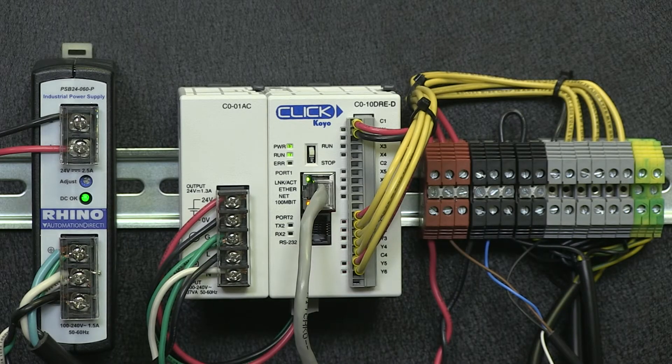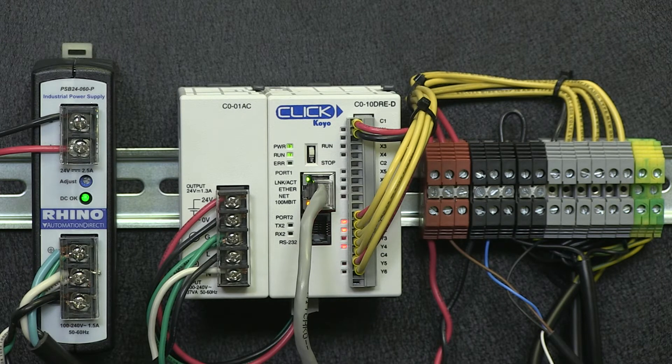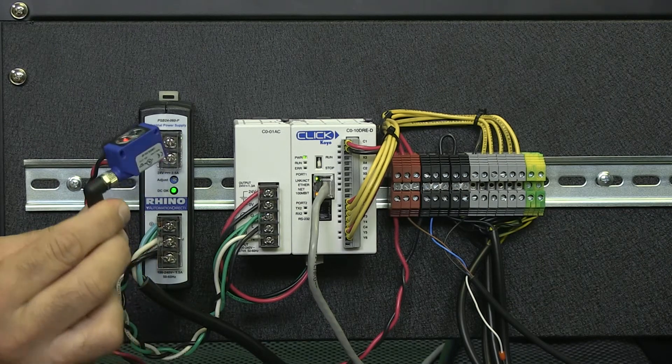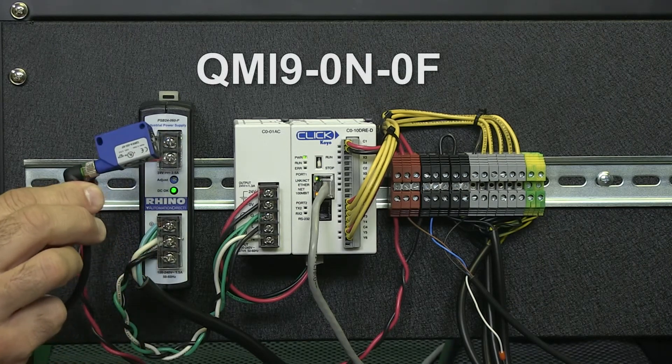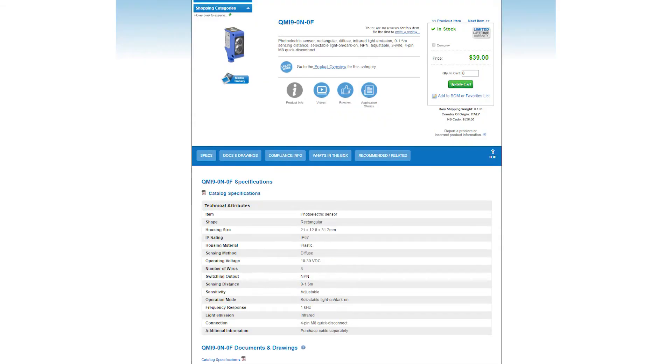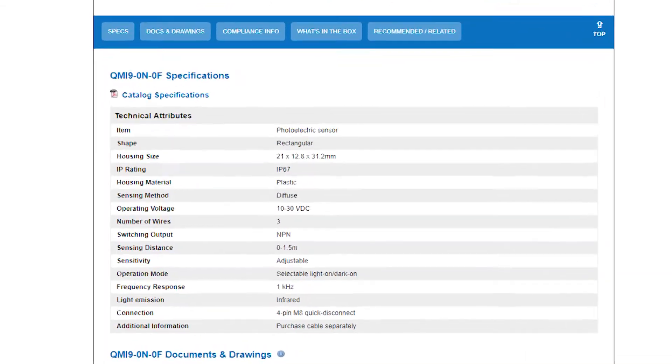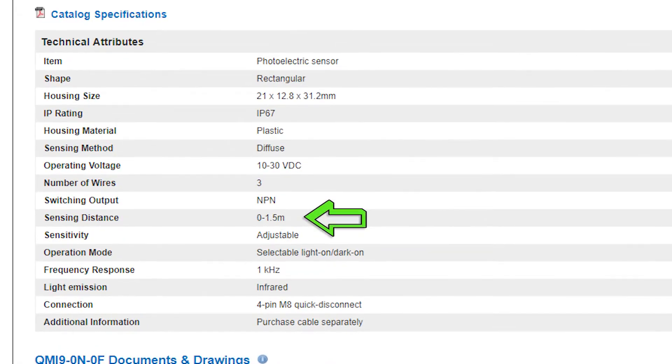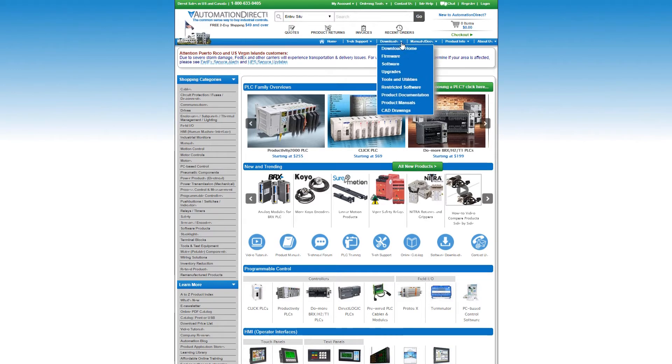Each valve is wired to an output on our PLC. I used Y1, Y2, Y3, and since the mail slot has an extend and retract it uses Y4 and 5. I chose a plastic housing photo sensor, part number shown. This DC photo sensor has a sensing distance of 1.5 meters and does not require a reflector or a two-part sensor with emitter and receiver. The sensor is wired to our X1 input, it's the only input we have. So, let's turn to the software.